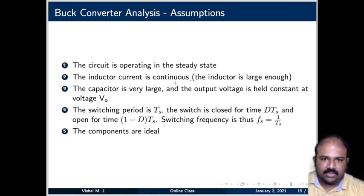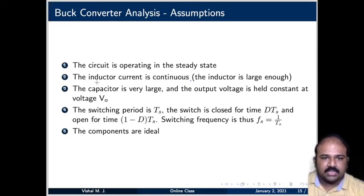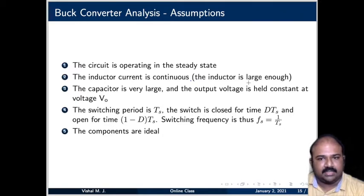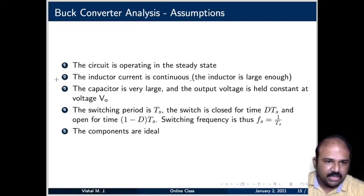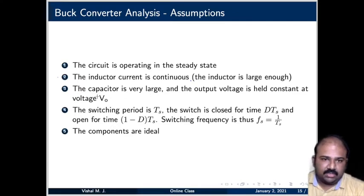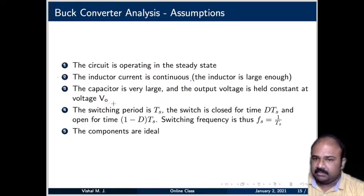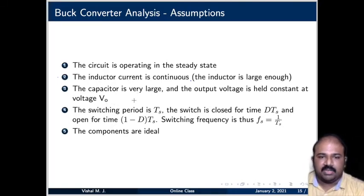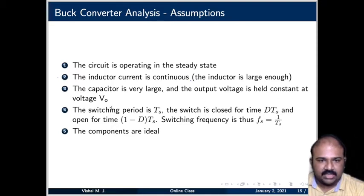Second, the inductor current is continuous — meaning the inductor is large enough to keep current flowing continuously. Third, the capacitor is very large, which means the output voltage is held constant at V0. This may not be a completely realistic assumption, but for simplicity we assume the capacitor is large enough to keep the output voltage constant at V0.